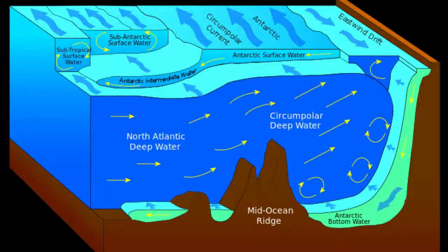arise from different ratios of various elements, especially silicon. Continental crust has the highest amount of silicon; such rock is called felsic.